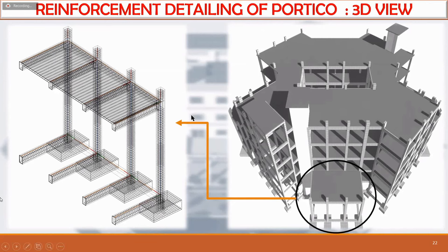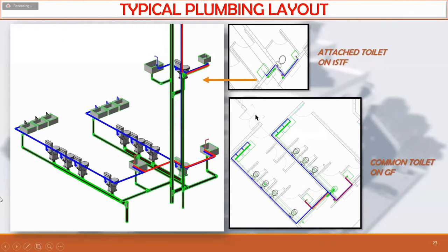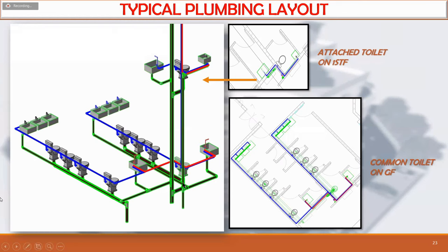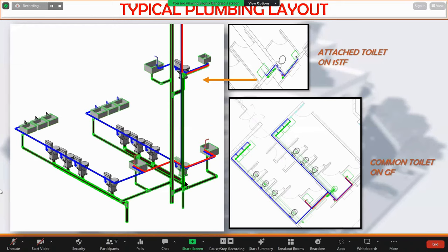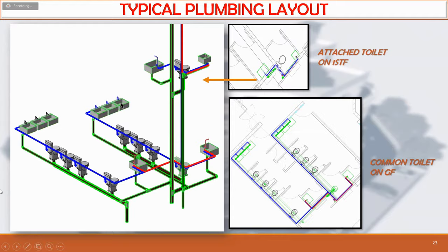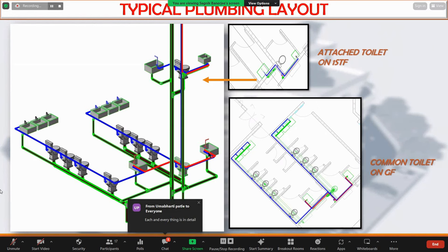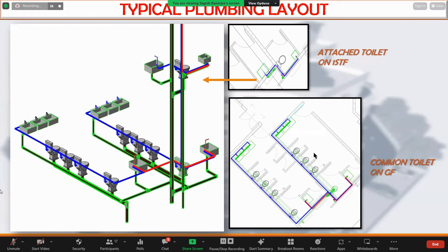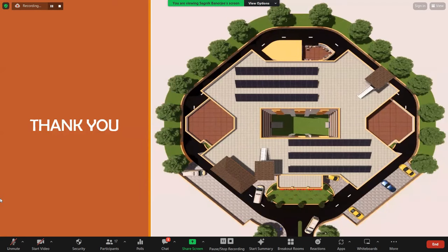The slab is around 150mm. This is a typical plumbing layout for the common toilet on the ground floor, provided with four WCs connected with wastewater via a single pipe. The same applies for three washbasins, and there is also a hot water sink provided beside the toilet. Thank you.